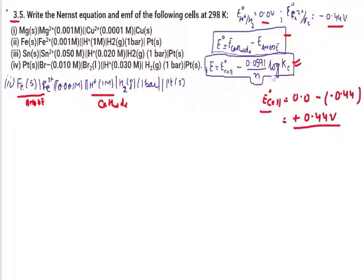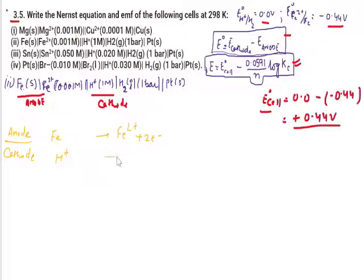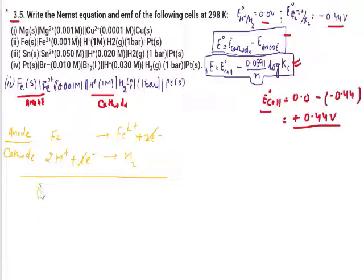The overall cell reaction is: Fe(s) + 2H⁺(aq) → Fe²⁺(aq) + H₂(g). Two electrons are transferred, so N = 2. For QC, we write concentration of Fe²⁺ and pressure of H₂ in the numerator, and concentration of H⁺ squared in the denominator (Fe is solid, so its concentration = 1).